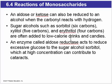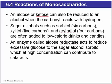and erythritol. In our bodies, we have an enzyme called aldose reductase, and it actually reduces excessive glucose to sorbitol, which at high concentration can contribute to cataracts.